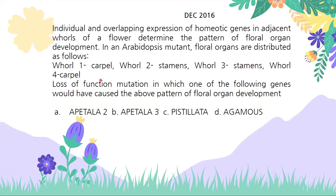Next question: individual and overlapping expression of homeotic genes in adjacent whorls of a flower determine the pattern. In Arabidopsis the pattern observed is carpel, stamen, stamen, carpel. Loss of which of the following genes would have caused this pattern?